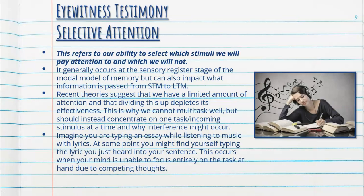Next, we have selective attention — our ability to select which stimuli we pay attention to and which we do not. It generally occurs at the sensory register as part of the modal model of memory, but it can also impact information passed from short-term memory to long-term memory. Recent theories suggest we have a limited amount of attention and that dividing it depletes its effectiveness. This is why we typically don't multitask well, and having multiple things happening causes the interference effect.